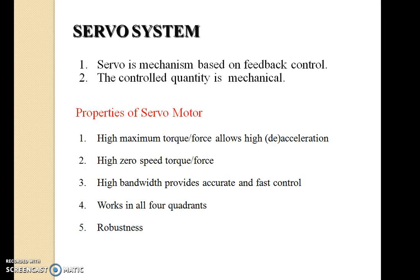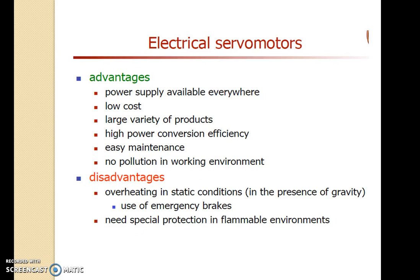The servo system is a mechanism based on feedback control where the control quantity is mechanical. Properties of a servo motor include high maximum torque, high zero-speed torque, high bandwidth, accurate and fast control, working in all four quadrants, and robustness. Advantages of electrical servo motors include power supply available everywhere, low cost, large variety of products, high power conversion efficiency, easy maintenance, and no pollution in the working environment. Disadvantages include overheating under static conditions and the need for special protection in flammable environments.